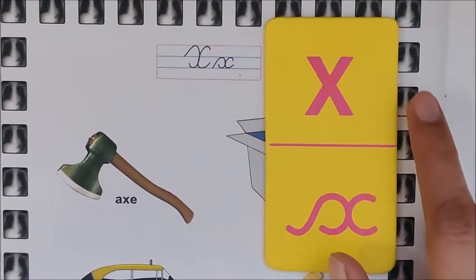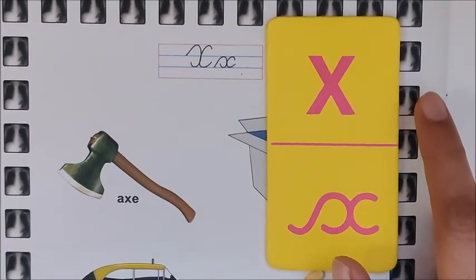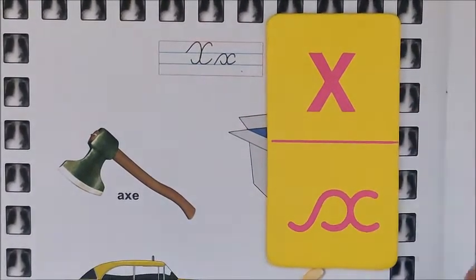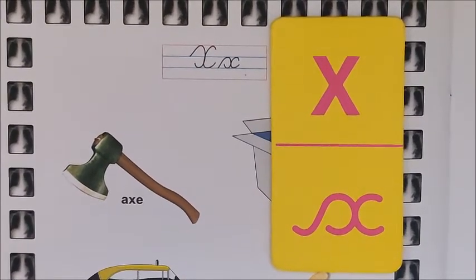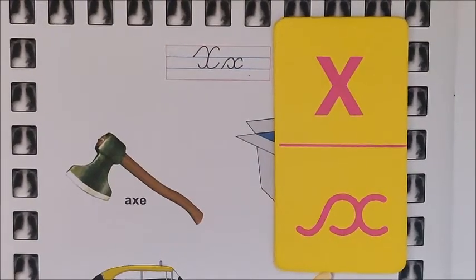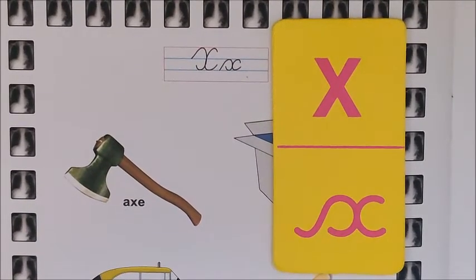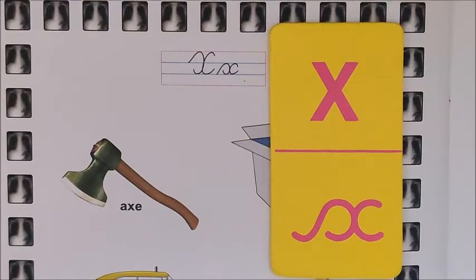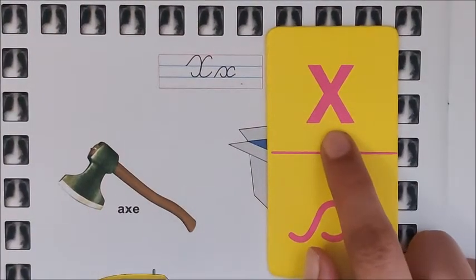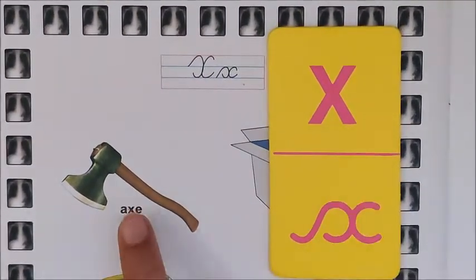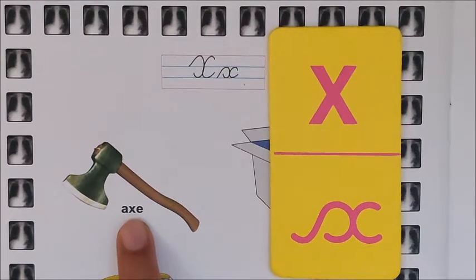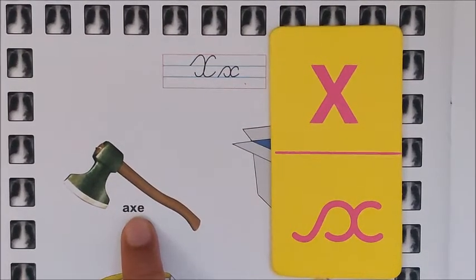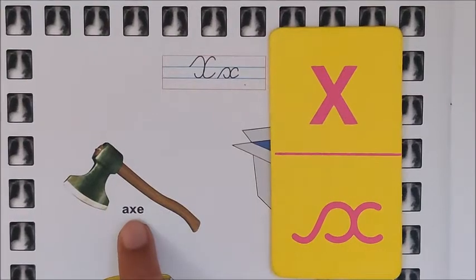Now we will look at the pictures. Children, we have very few words beginning with letter X, so we will look at the pictures which have the X sound. The first picture is X. Say after me children: X. Did you hear the sound of X in this word?